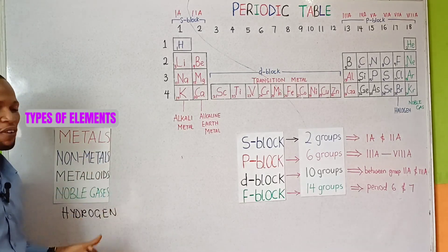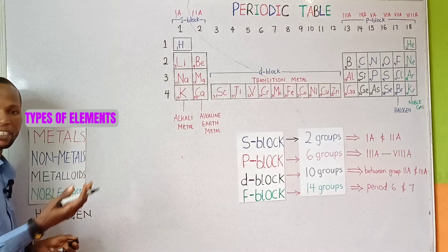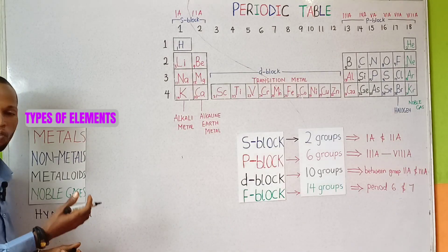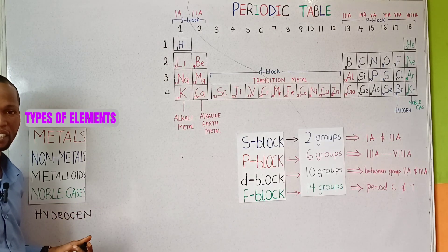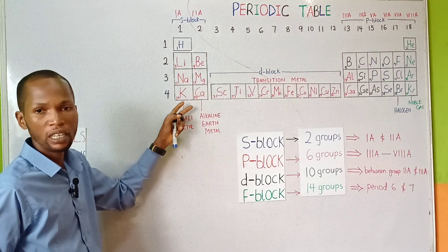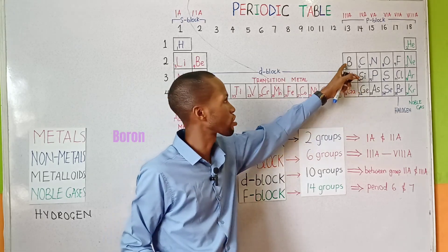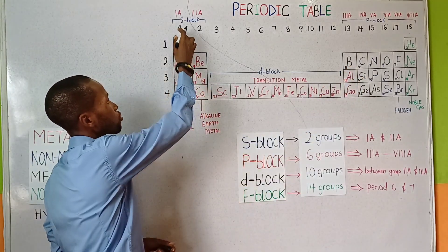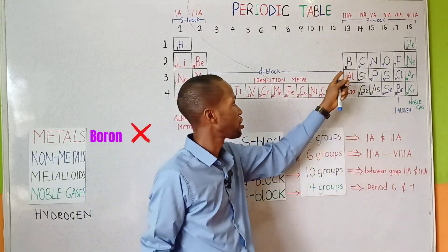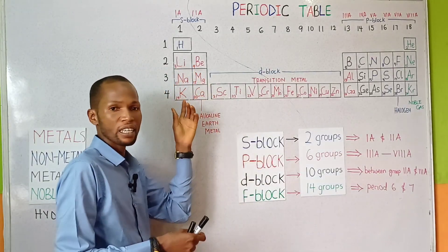These are the five types of elements in the periodic table. Metals are electropositive elements which ionize by losing electrons to form a positive charged ion. Metals include group 1A elements, 2A elements, and group 3A elements, excluding boron. So groups 1, 2, and 13 elements are metals, excluding boron.